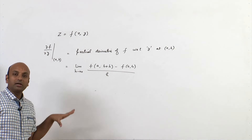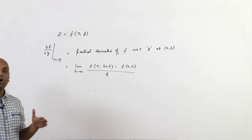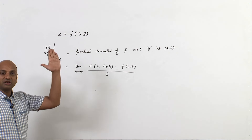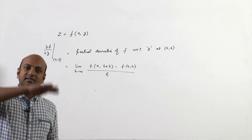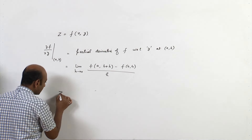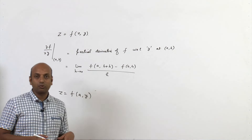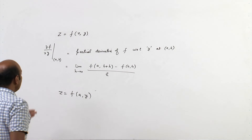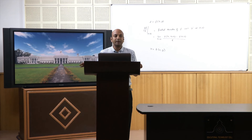Geometrically, ∂f/∂y gives the rate of change of f along the y-axis, or in the ĵ direction. The plane x = a cuts the surface z = f(x, y) into a curve, and the slope of the tangent to that curve at point p in the plane x = a represents ∂f/∂y at (a, b).